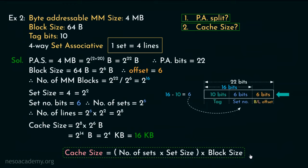Consider example number 3, where the cache size is given as 256 kilobytes, the tag bits are provided as 8 bits, and the cache is of 8-way set associative organization. We are being asked about the byte addressable main memory size. Suppose the physical address split has 8 bits for the tag, x bits for the set number, and y bits for block or line offset. Using the formula: cache size equals number of sets times set size times block size.